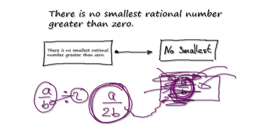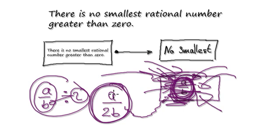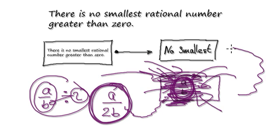Because here we're saying this number here is the smallest possible — the very smallest rational number. But then if we make this assumption, we can always divide it by 2 to get an even smaller one. So this assumption here is false. So it has no choice — this has no choice but to be true.